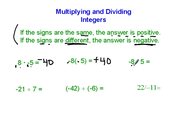Here we have -8 times 5, and again 8 times 5 is 40. Ignore the signs. The signs are different because 5 is positive and 8 is negative. Since they're different, the answer is negative.